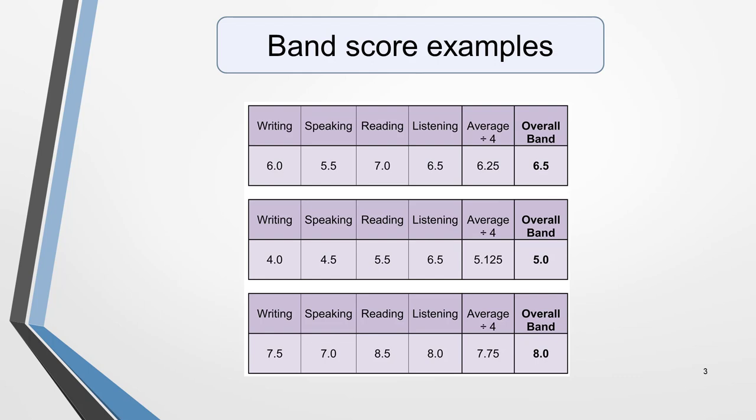Pause the video and study these examples. Note that if the average of the four individual scores ends in 0.25, the overall IELTS score will be rounded up to the next half band, as in the first two examples. If it ends in 0.75, the overall score will be rounded up to the next whole band. This is the case in the third example.